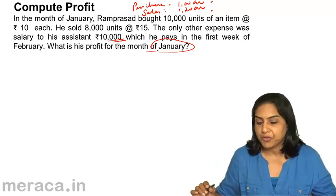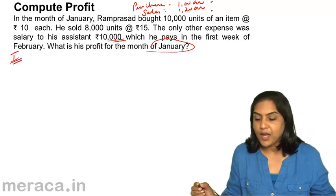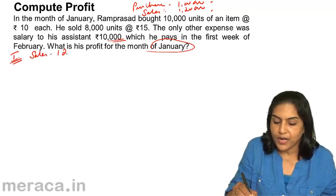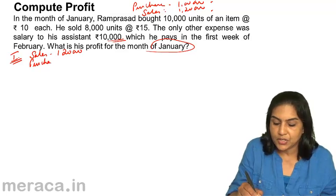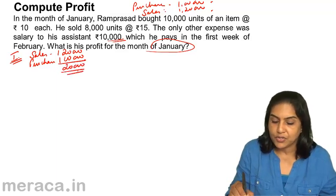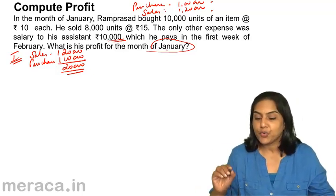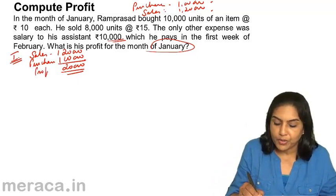So if somebody asks what is the profit for January, Accountant One says: we have made sales of 1 lakh 20,000 and purchases of 1 lakh, therefore the profit for January is 20,000. The expense of 10,000 is paid only in February, so it is excluded — giving a profit of 20,000.